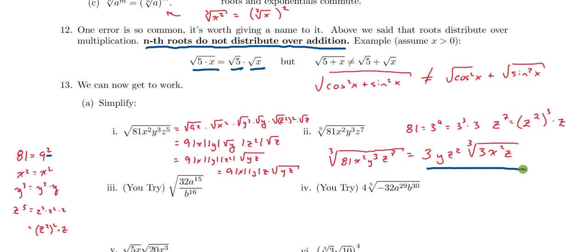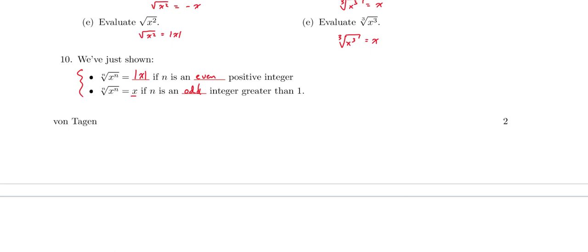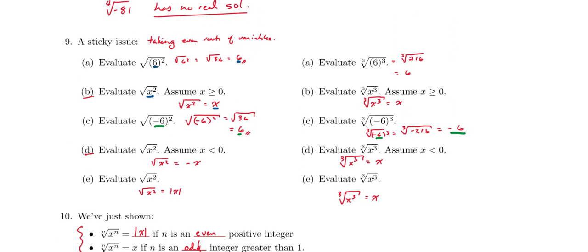These might be a little harder than ones you've done before. Notice that because we have an even root, when we pull out perfect squares of variables they have to come out with absolute value symbols. But because we have an odd root, when we pull out perfect cubes of variables they come out without the absolute value symbol. This is because the nth root of x to the n equals |x| if n is even, and just equals x if n is odd.